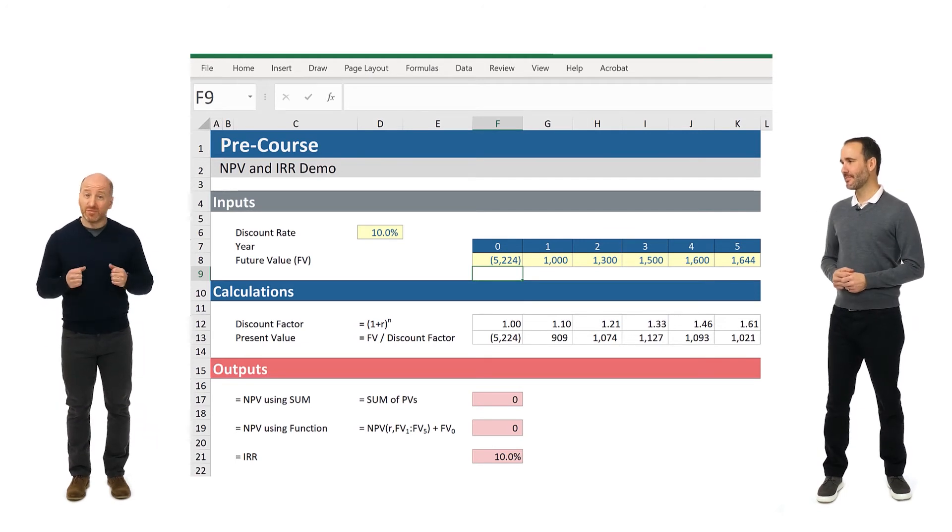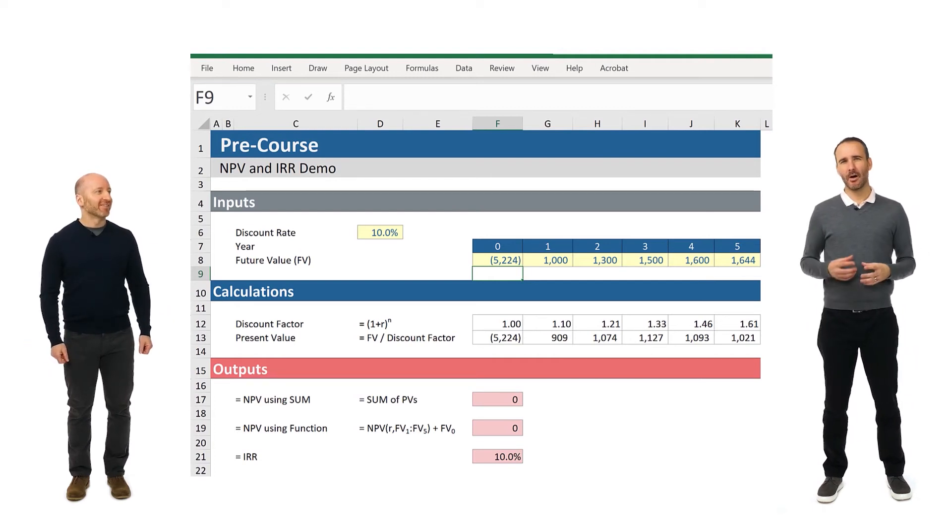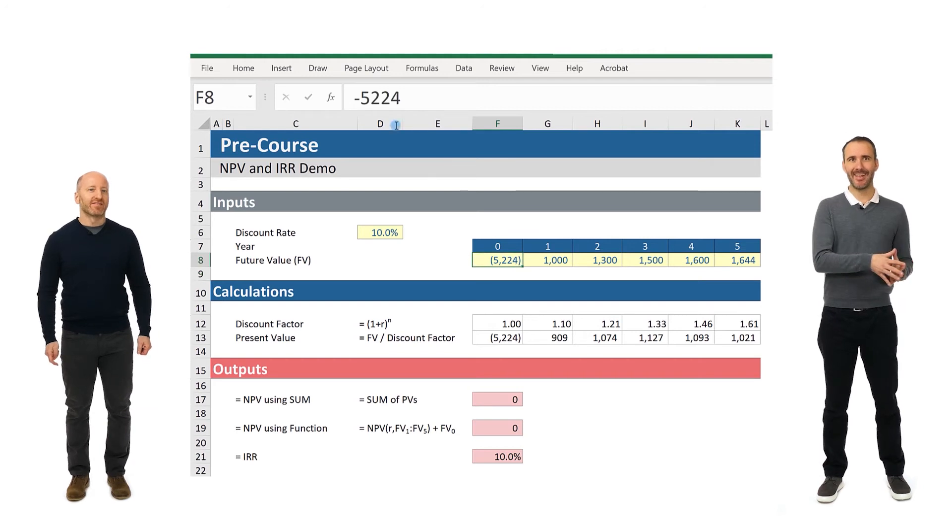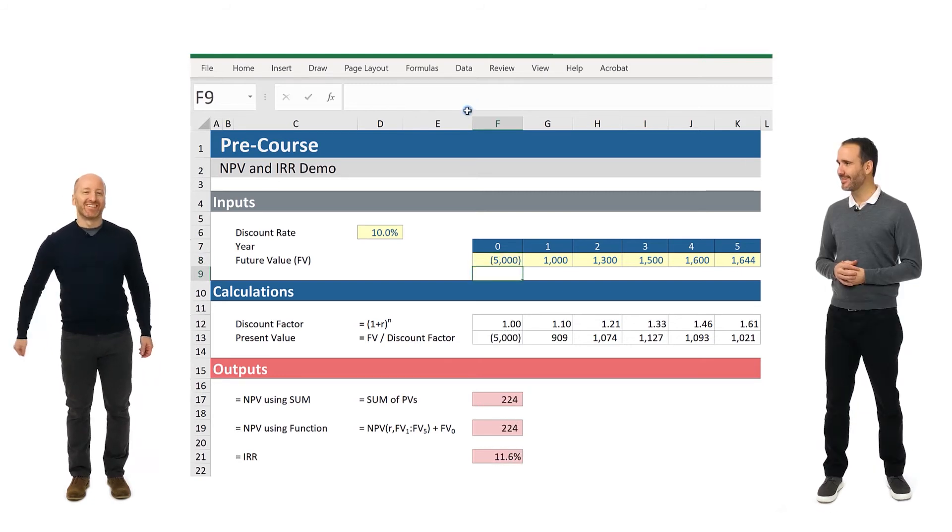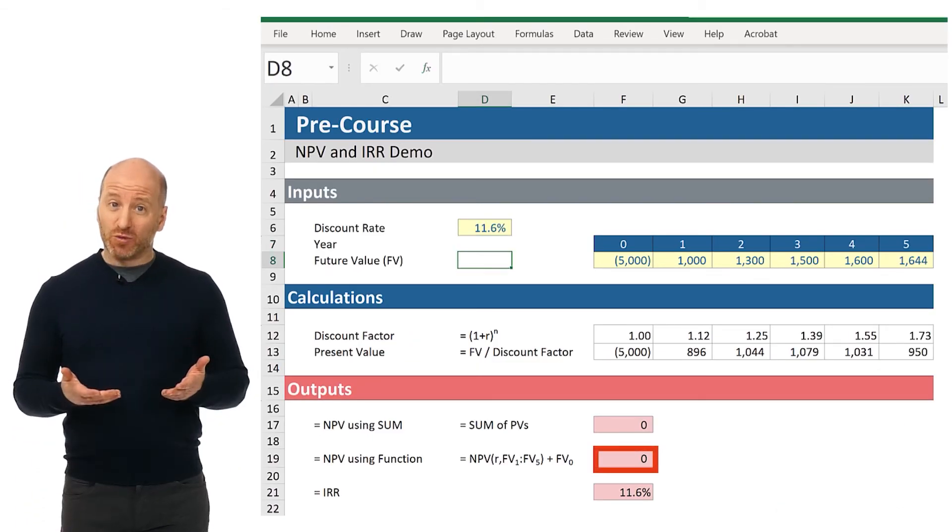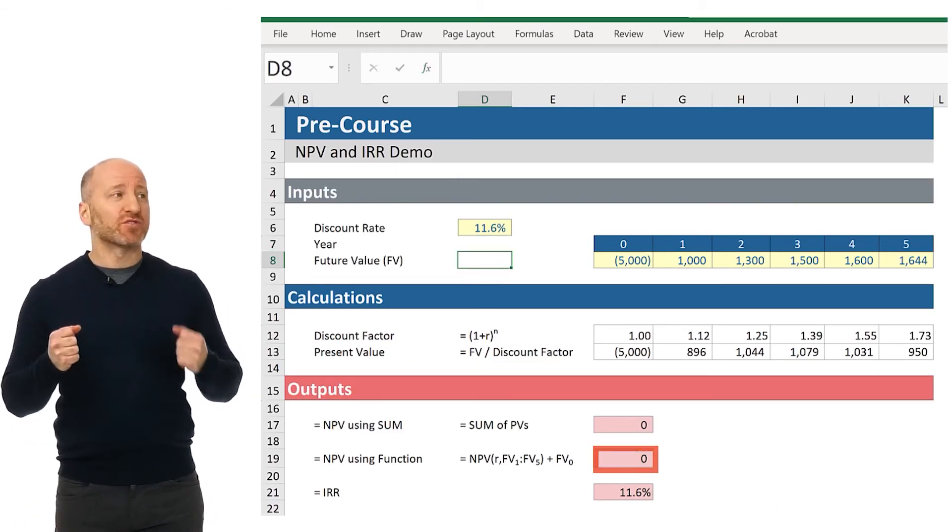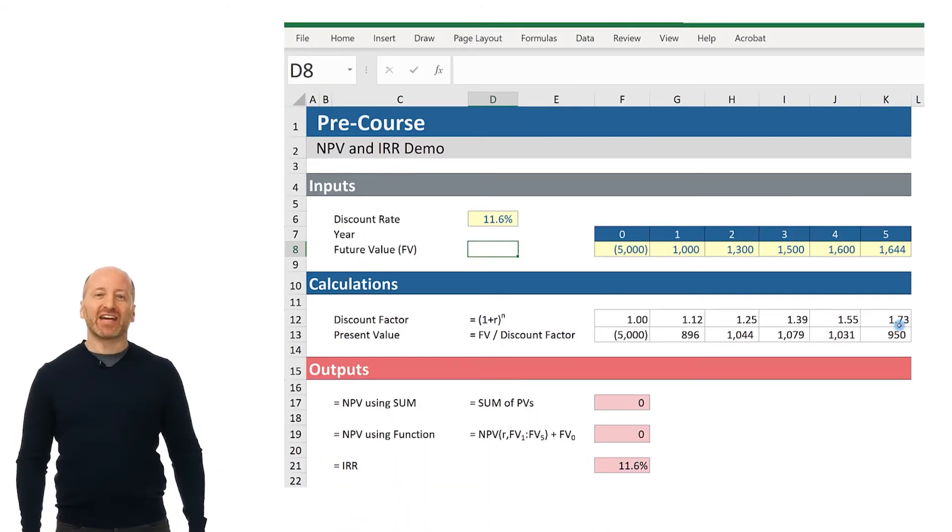And if instead you could buy the investment for only 5,000, but your discount rate was 11.6%, what would be the net present value? Would it be zero? Yes. Why? Because 11.6% is the IRR and the IRR is the discount rate, which gives me an NPV of zero. Yes. And we can change the numbers in the model to prove that that's the case. And if the discount rate is higher than 11.6%, what's going to happen to the net present value? Does it go negative? Yes. It does. Let's change the discount rate to 15% and you can see what happens.